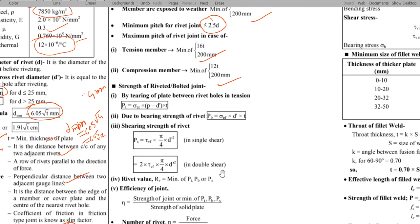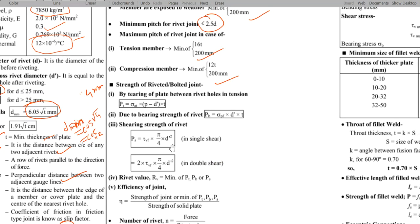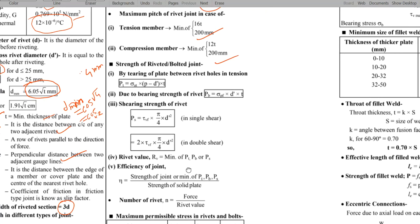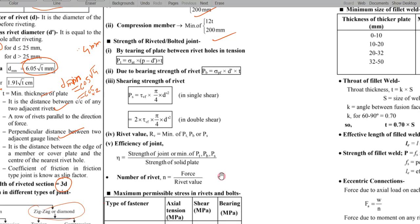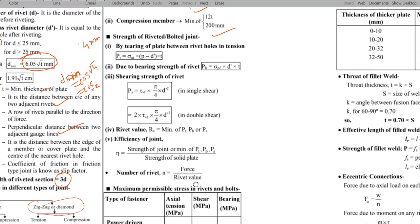Tearing failure, bearing, and shearing of the rivet. Mainly how we can evaluate tearing failure, bearing, and sharing. It's a rivet value we can calculate. Based on that, the minimum value, efficiency can be calculated. Tearing formula is pt is equal to sigma at into p minus dH into t. dH should be hole diameter. Bearing is permissible stress into d dash into t. Similarly shearing is tau vf into pi by 4 into d square. For single shear we are pi by 4 into d square or double shear we are multiplying with 2. Based on that, the minimum rivet value, we divide. Total force divided by rivet value, we calculate number of rivets, total force divided by rivet value, we calculate efficiency of the joint.